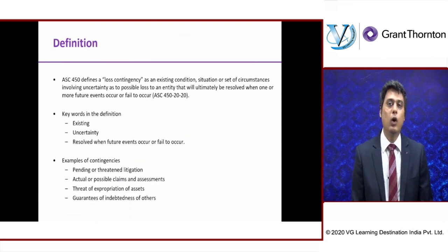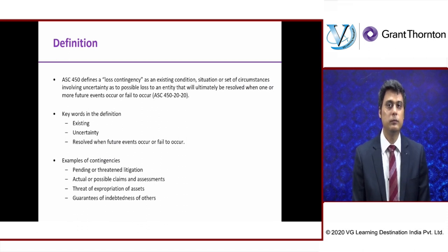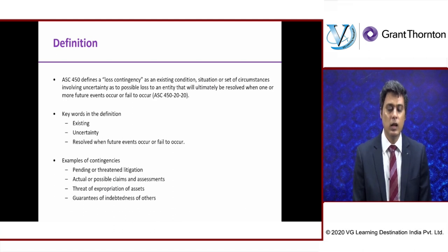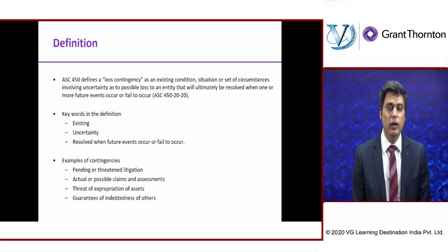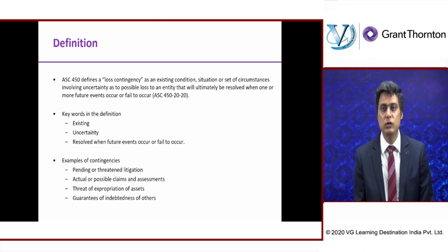Now let's talk about what this really means — the definition as per FASB Accounting Standards Codification. It defines a loss contingency as an existing condition, situation, or set of circumstances involving uncertainty. The condition already exists — you've already exceeded the speed limit — but there is uncertainty regarding whether that police car is chasing you. There is an uncertainty as to possible loss that will ultimately be resolved when one or more future events occur — the police car stops you — or fail to occur — the police car goes past you. The keywords are: existing condition, uncertainty, and resolved by future events.